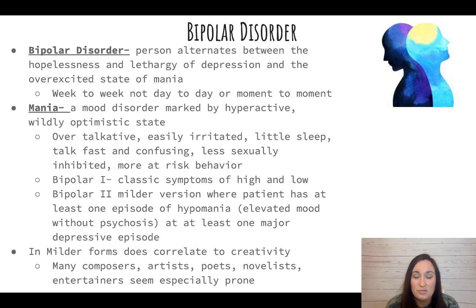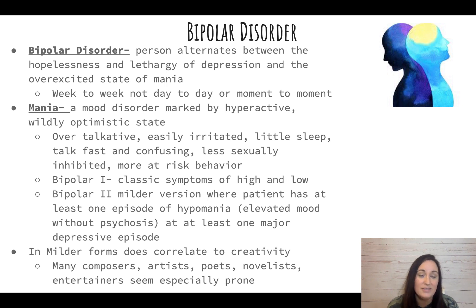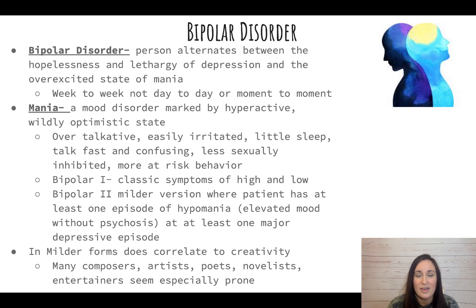There are two types of bipolar. Bipolar one is the classic condition: the person has a major depressive episode and also has time periods of mania. Bipolar two is the milder version where the patient has at least one episode of hypomania — that's an elevated mood without psychosis — and it's less severe than a full-blown manic episode.